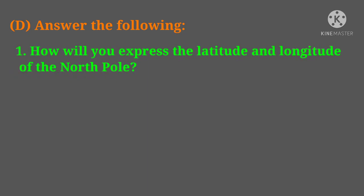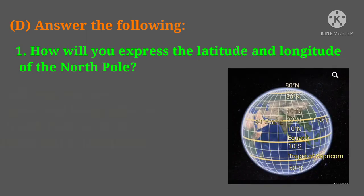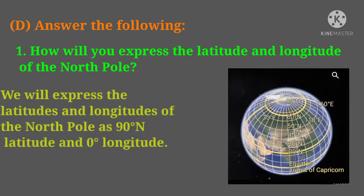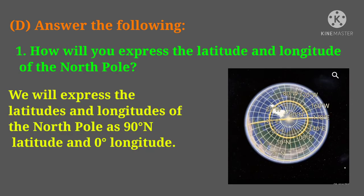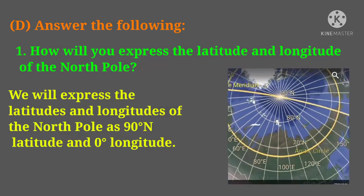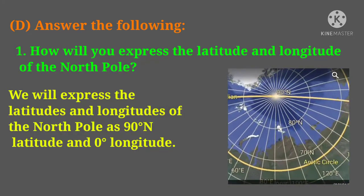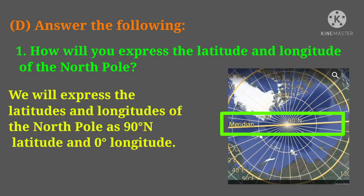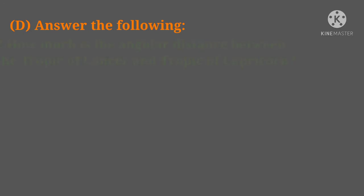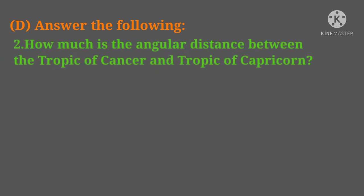Question D, first question: how will you express the latitude and longitude of the north pole? We will express the latitude and longitude of the north pole as 90 degree north latitude and 0 degree longitude.